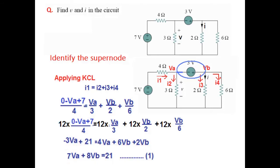So after cutting, this becomes 3. So 3 times VA, negative 3VA, 3 times 7 is 21. Same way, all this. So this is the equation. Equating the like terms, we get equation number 1.